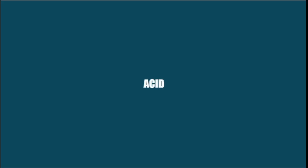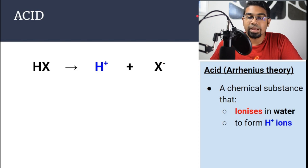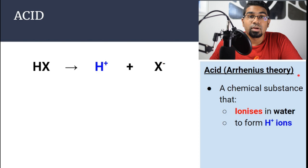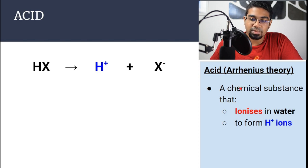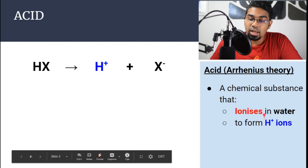First, let's look at acids. There are a few theories on what an acid is, and in this video we're going to be looking at the Arrhenius theory. According to Arrhenius theory, an acid is a chemical substance that dissociates to form H+ ions.